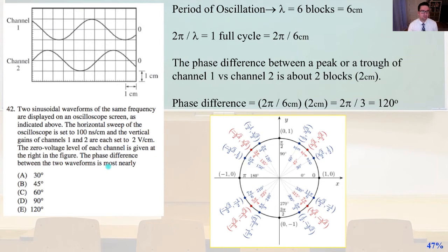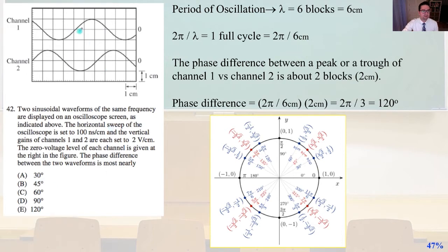The phase difference between the two waveforms is most nearly... The period of oscillation, lambda, is about 6 blocks, equal to 6 centimeters. We count 1, 2, 3, 4, 5, 6 blocks. Remembering that 2π over lambda represents one full cycle, we get 2π over 6 centimeters.